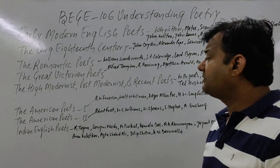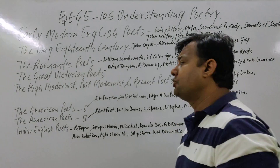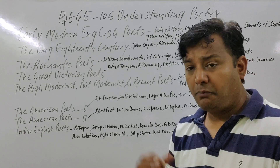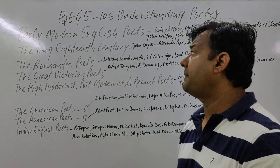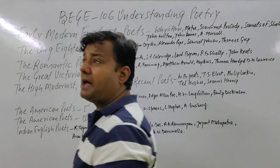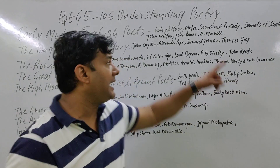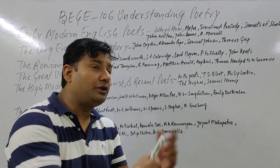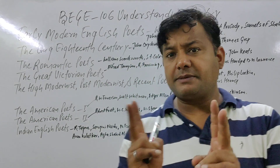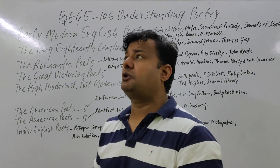So let's start the class. The first thing we need to work on is BGE 106: Understanding Poetry. This course has 8 blocks. The early modern English poets are covered first. Here we will understand: why to read poetry and how to understand poetry — these two key concepts will be cleared.